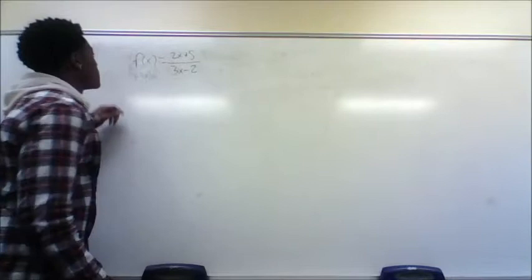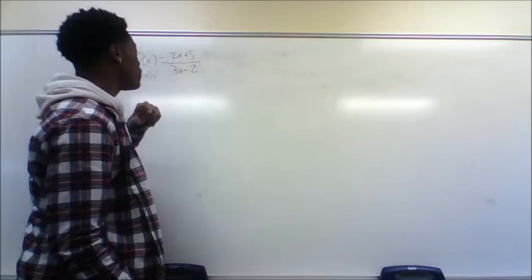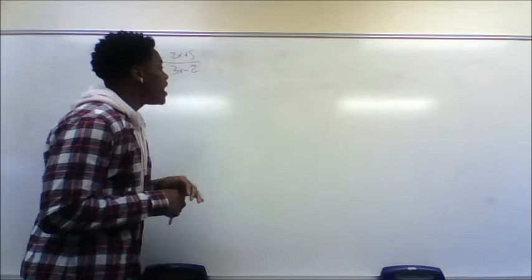My partner Trent will now do questions five through seven. We'll find the slope function of 2x plus 5 over 3x minus 2. The first thing I see is a variable in both the numerator and denominator, so I think quotient rule automatically. The quotient rule states: low d high minus high d low over low squared.